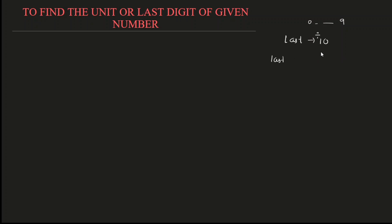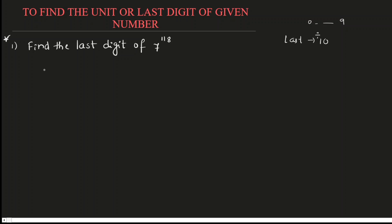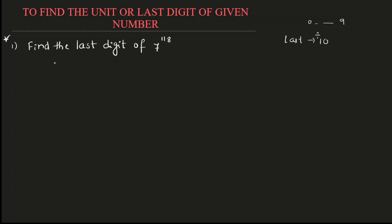You need to divide this by 10. Let us start with the example. Find the last digit of 7 raised to 118. This is the number given. How are you going to solve it? As I said, to find the last digit, we need to divide this by 10. And whenever you have a high power, we have to start with taking power 1 or power 2.